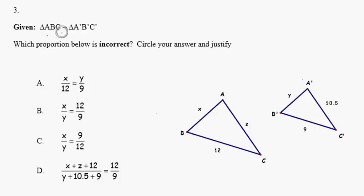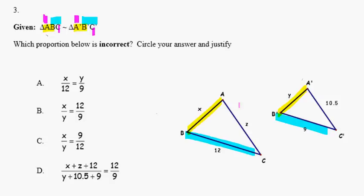Here we're given that triangle ABC is similar to triangle A prime, B prime, C prime. So these two triangles are similar. Let's see if they're oriented in the same way. AB matches up with A prime B prime, BC matches up with B prime C prime, and A and C matches up with A prime C prime. Sure enough, these two are oriented in the same way.